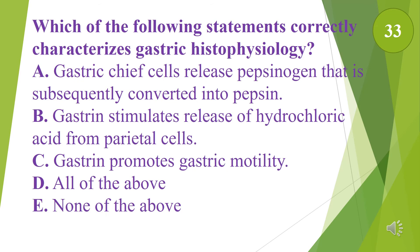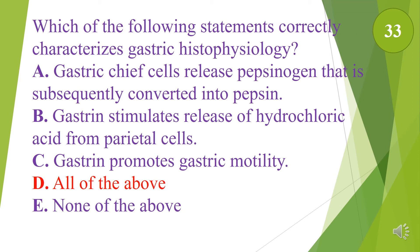Which of the following statements correctly characterizes gastric histophysiology? A. Gastric chief cells release pepsinogen that is subsequently converted into pepsin. B. Gastrin stimulates the release of hydrochloric acid from parietal cells. C. Gastrin promotes gastric motility. D. All of the above. E. None of the above. The answer is D, all of the above.